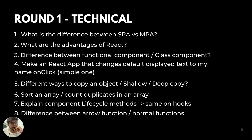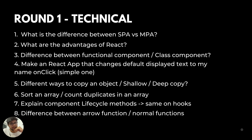After that, he asked me the different ways in which you can copy an object. I explained four different ways for copying an object. Then he questioned me which one is a deep copy and what is a shallow copy, and asked me to explain the difference.